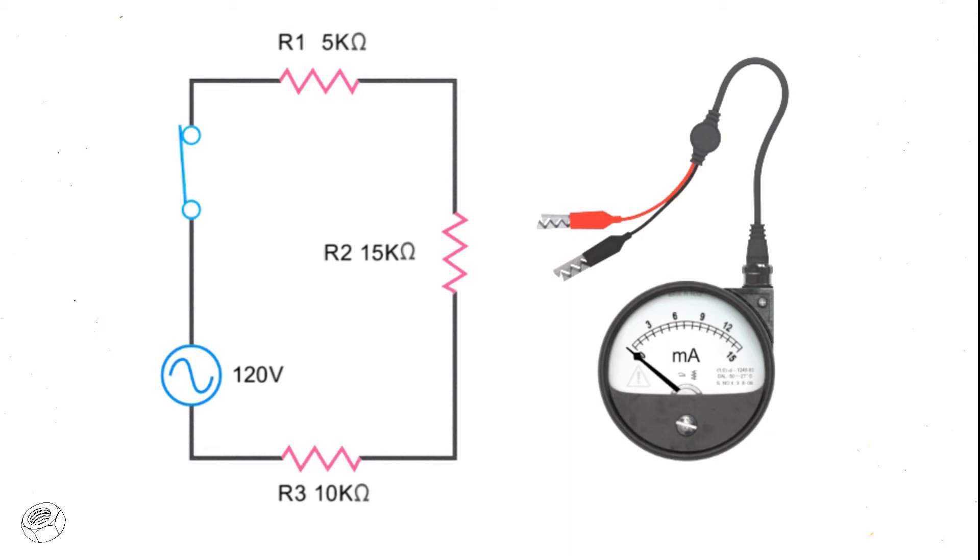Ammeters are used to measure current in a circuit. They are connected in series with the components to be measured. This means that the ammeter is placed in line with the circuit to be measured.